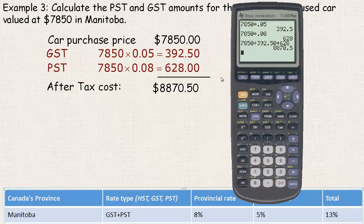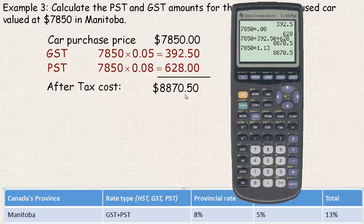That's the same value I got here a moment ago. And again, if you want to use the shortcut — just to know the after-tax price with 13% added on — multiplying by 1.13 gives the exact same value. So that's how you calculate taxes: provincial, GST, PST, whatever it is. And that's the end of the tutorial.